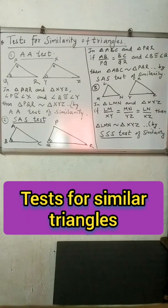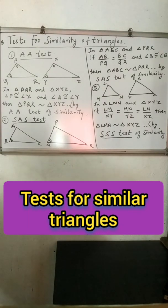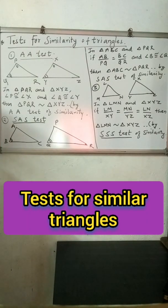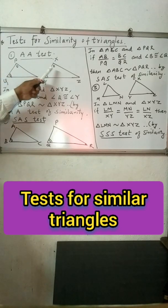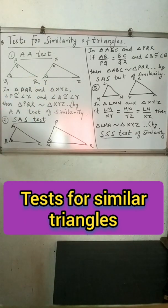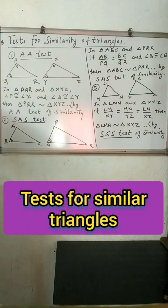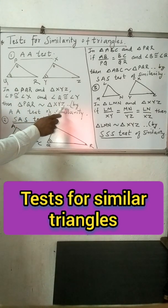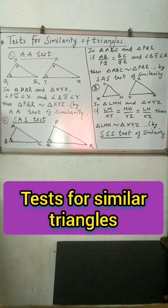Tests for similarity of triangles. First test is the Angle-Angle (AA) test. For 1-to-1 correspondence, if in triangle PQR and triangle XYZ, angle P is congruent to corresponding angle X, and angle Q is congruent to angle Y, then triangle PQR is similar to triangle XYZ by the Angle-Angle test of similarity.